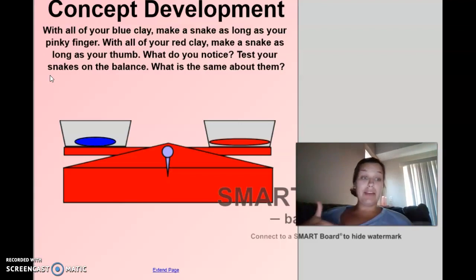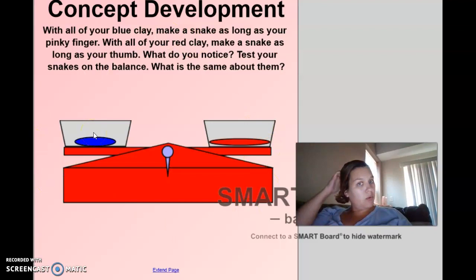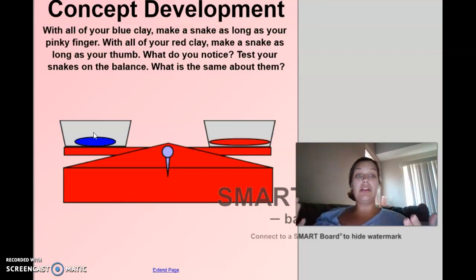So the blue one was as long as my pinky finger, and the red one is as long as my thumb. So that must mean, since the blue one was as long as my pinky finger and my pinky finger is longer, that must mean that the blue one is going to weigh more, right? Yes or no? No. Look at my scale. What do you notice about our scale? Our scale is still heavier and lighter or balanced? Balanced. Our scale is still balanced. So does the snake that's the length of my pinky finger and the snake that's the length of my thumb, do they weigh the same? Yes, they do. Because if they didn't, our scale would look slanted. Our scale is still balanced.